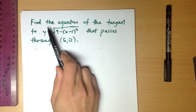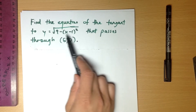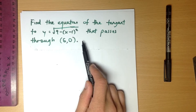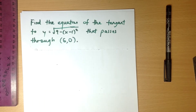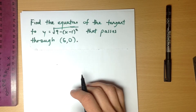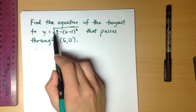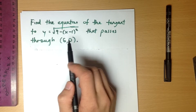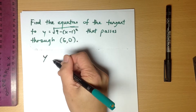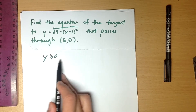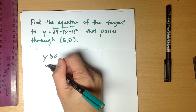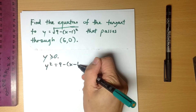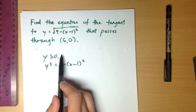So the question is: find the equation of a tangent to this function that passes through a particular point. Before we do anything, you've got to work out what this function is and what it looks like. Some of you might recognize the shape, but for those who don't, a bit of manipulation will quickly show you. You've got y equals the square root of something, and remember that the square root must be positive. So you must note the range restriction at the beginning. Once I note that, I can square both sides and a more familiar shape emerges.